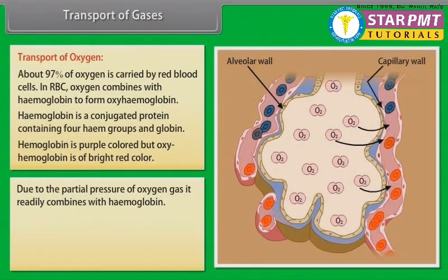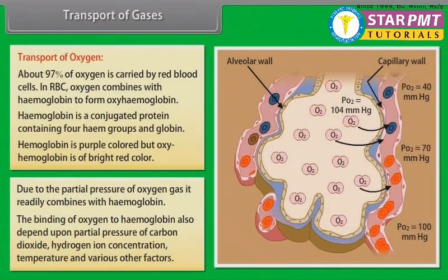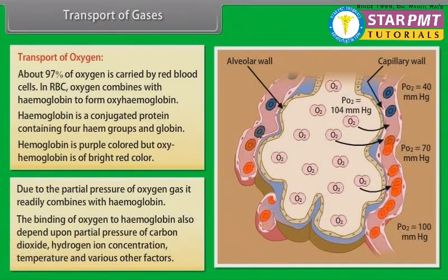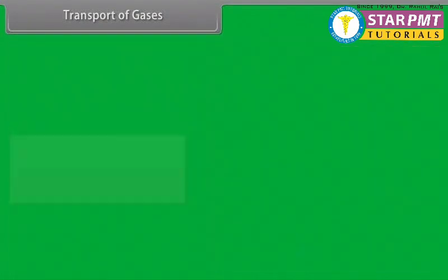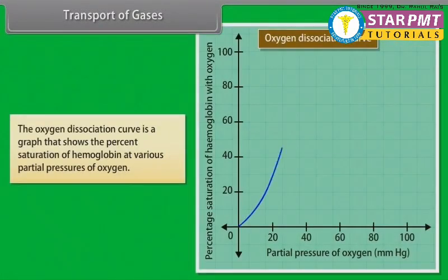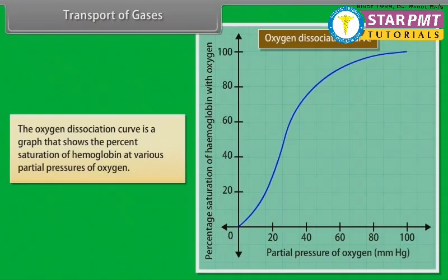Due to the partial pressure of oxygen gas, oxygen readily combines with hemoglobin. The binding of oxygen to hemoglobin also depends upon the partial pressure of carbon dioxide, hydrogen ion concentration, temperature, and various other factors. The oxygen dissociation curve is a graph that shows the percent saturation of hemoglobin at various partial pressures of oxygen.